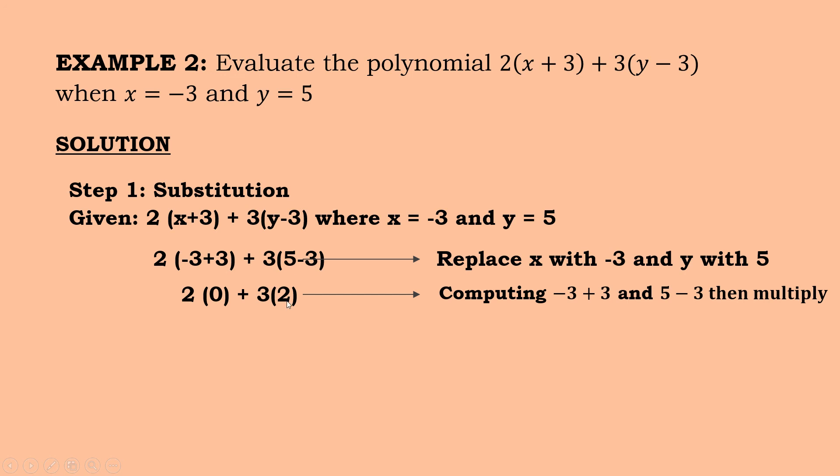So we have to multiply. So 2 times 0, we have 0. 3 times 2, we have 6. So after that, we have to add. So 0 plus 6, 6. So your answer is 6. So the answer of your polynomial, evaluating it, if the value of your x is negative 3 and y is equal to 5, you get the answer 6.